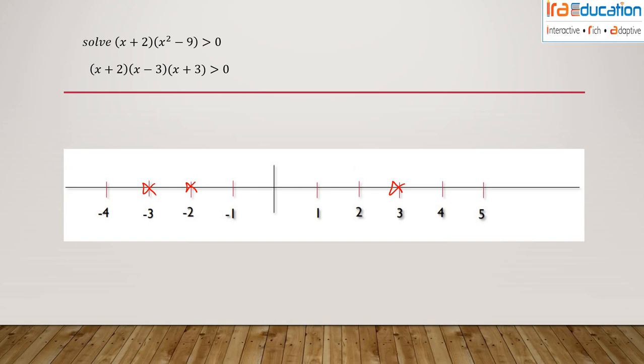I'll create the intervals: negative infinity to -3, then -3 to -2, then -2 to 3, and finally 3 to positive infinity. Now we have four intervals: 1, 2, 3, and 4.